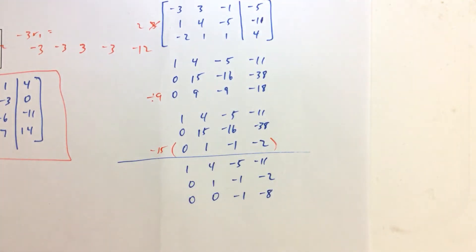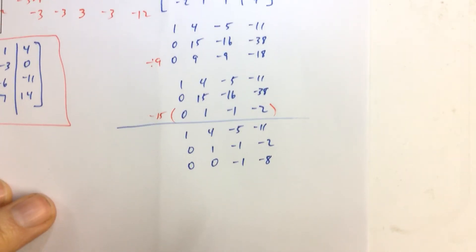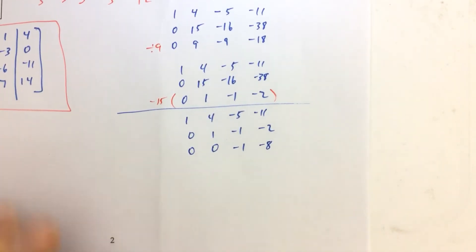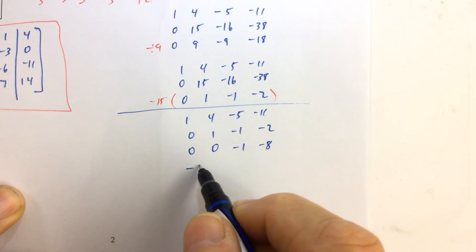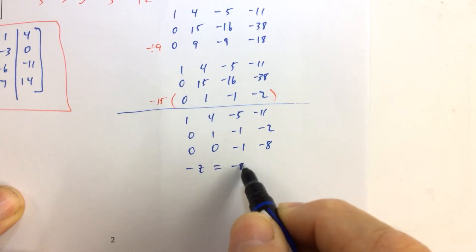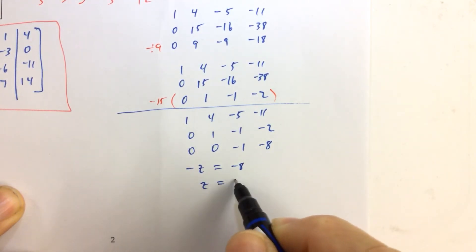So what I'm trying to do is, is eliminate as much work as possible. And so, we ended up getting, you want to get zero, zero, zero here. So we get z, we solve for z. So we get negative z equals negative eight. And we get z equals eight.